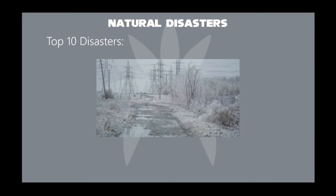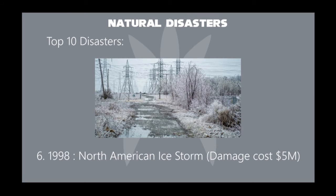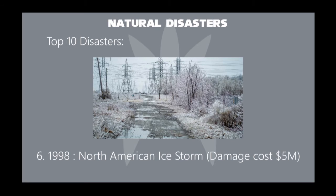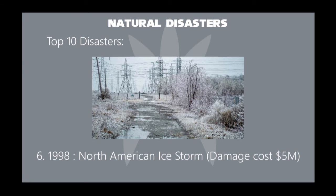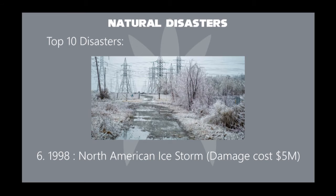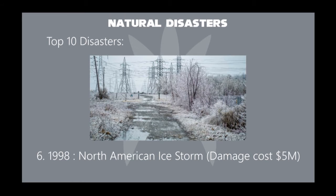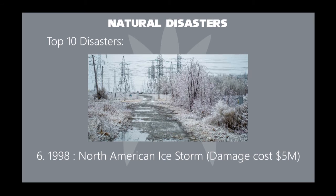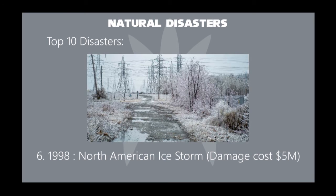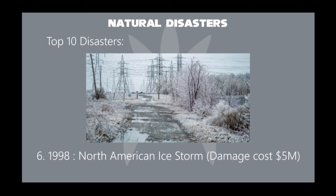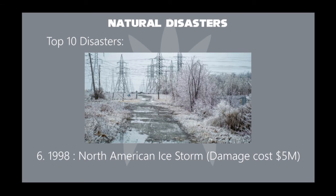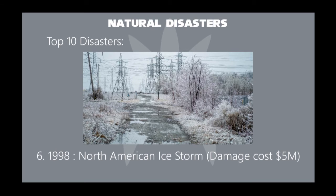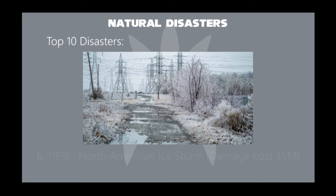In 1998, the North American ice storm was a massive combination of five smaller successive ice storms in January, that struck a relatively narrow swath of land from eastern Ontario to southern Quebec, New Brunswick, and Nova Scotia in Canada, and bordering areas from northern New York to central Maine in the United States. It caused massive damage to trees and electrical infrastructure all over the area, leading to widespread long-term power outages. Its damage cost was about $5 million.